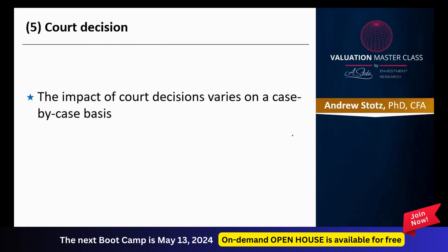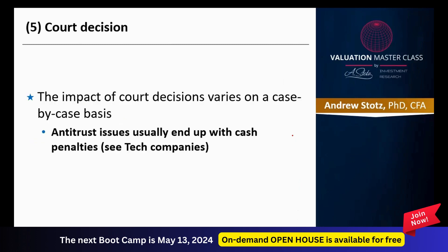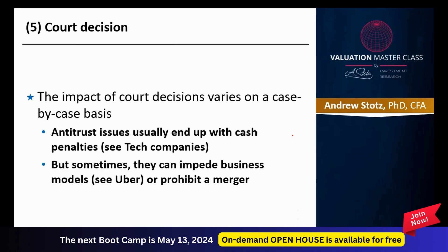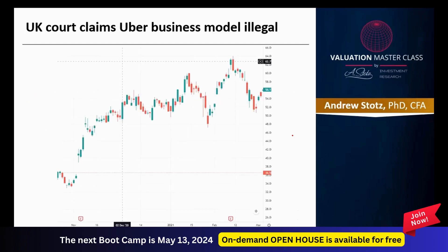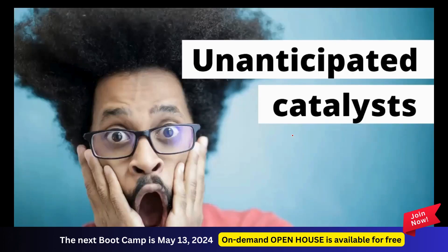The FDA didn't approve FibroGen's treatment of anemia patients, and that hurt the biotech company — it fell 40% in one day. We also have court decisions involving antitrust issues, which usually end up in penalties but can sometimes impede business models or prohibit a merger. Here we can see that UK courts found Uber's business model was illegal, and the share price of Uber in America started collapsing. Now let's talk about unanticipated catalysts.